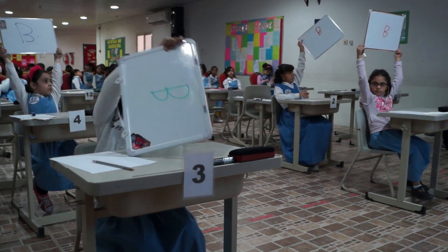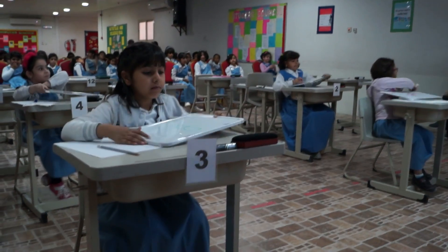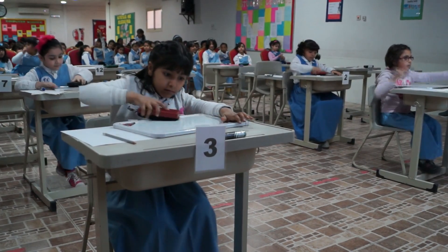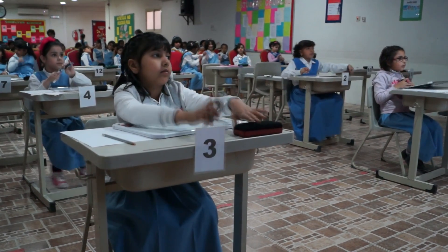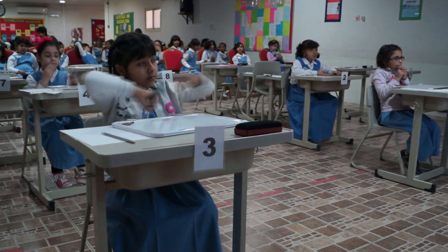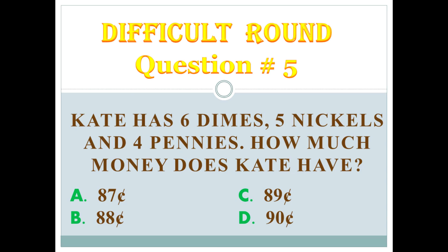The correct answer is B. All of you are correct. Question number 5. Kate has 6 dimes, 5 nickels, and 4 pennies. How much money does Kate have? Again, Kate has 6 dimes, 5 nickels, and 4 pennies. How much money does Kate have?